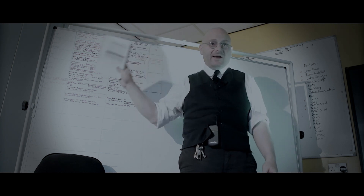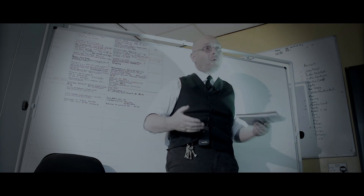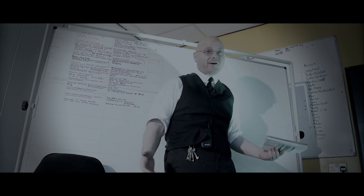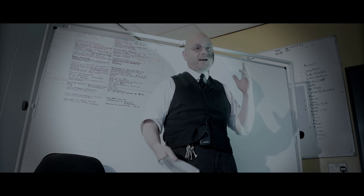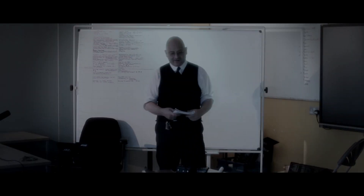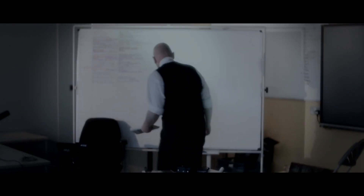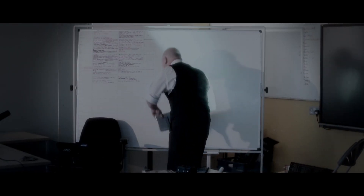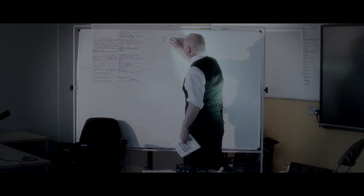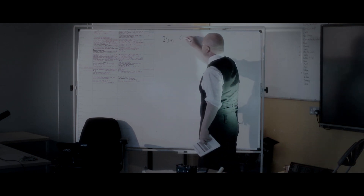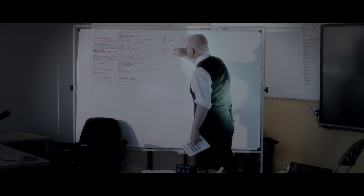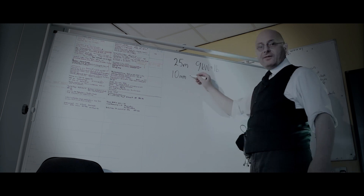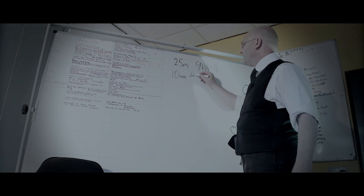The way we do it is by working out, first of all, what the fault current is going to be in our designed circuit. So let's go back to that 9 kilowatt, 25 meter circuit. 9 kilowatts equals IB. We used 10 millimeter twin and earth with a 4 millimeter CPC.